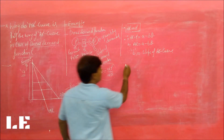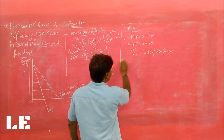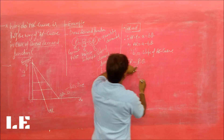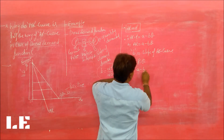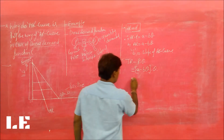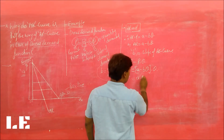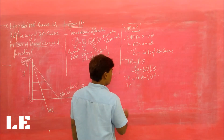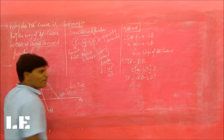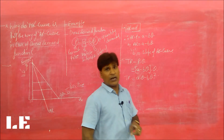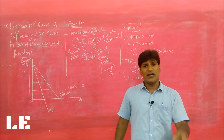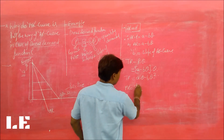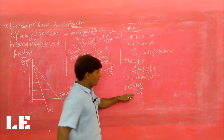Now let's find the slope of MR. To find the slope of MR, we first need to find total revenue. Total revenue = Price × Quantity. Price is given as a − bQ, multiplied by Q. So total revenue = aQ − bQ². Now we need to find marginal revenue — let's derive its slope.